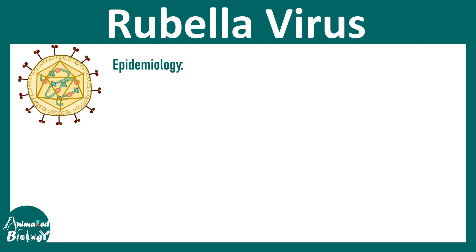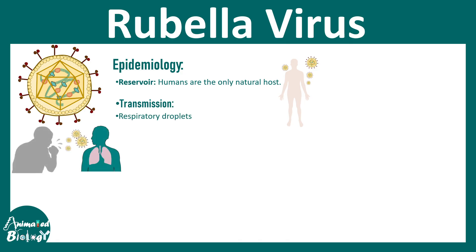The reservoir of rubella virus is basically humans, so humans are the natural host. Transmission can occur via respiratory droplet, which is common for measles and mumps as well. So these three infections — mumps, measles, and rubella — can all be transmitted via respiratory droplet.